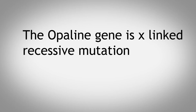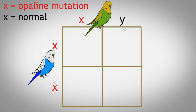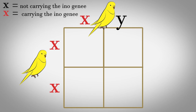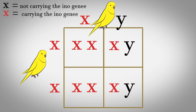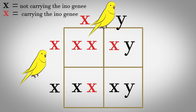Let's look at the gene in the Punnett square now that we've learned what it is. If both parents are opaline, then all their offspring will be opaline — we've already seen that with the ino gene. We also know that if the mother is opaline and the father is a carrier, then half the offspring would be opaline, 25% of males are carriers, and 25% of females are not opaline.